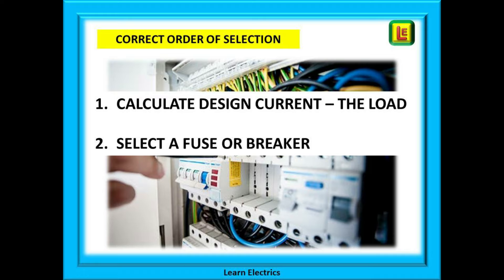Next we will select a fuse or circuit breaker that will take at least that amount of current. Any smaller and the breaker will continually nuisance trip. But neither must the breaker be of such a great size that it will never operate. It should be the same as or just above the maximum design current. The breaker size uses the symbol IN for nominal current rating — think of it as N for the number printed on the breaker. A 32 amp breaker has an IN of 32 amps.